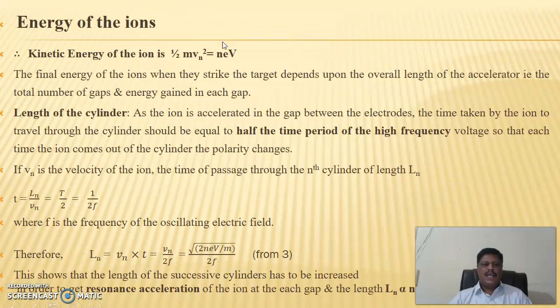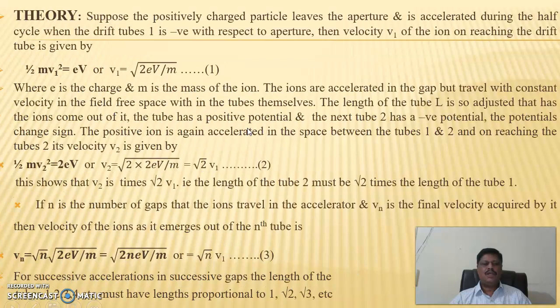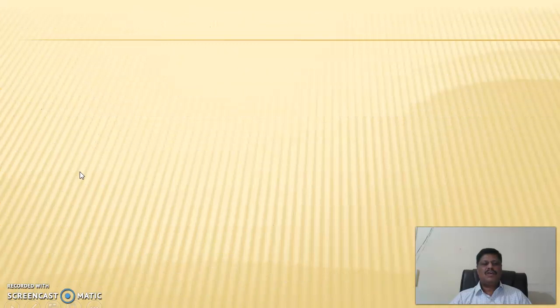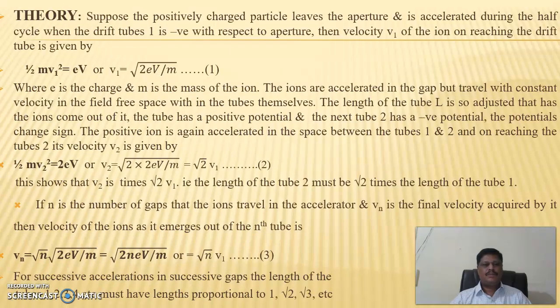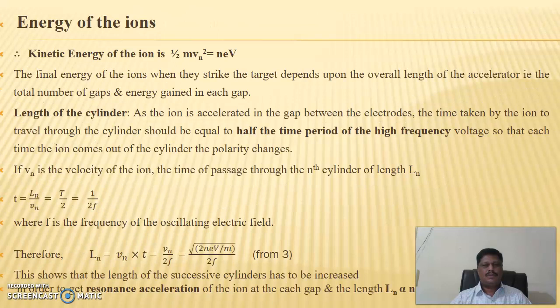The expression for energy of the ions: the kinetic energy of the ions coming out of the drift tubes is given by ½mVn² = neV, because ½mV1² = eV, ½mV2² = 2eV, so for the nth tube, it is ½mVn² = neV. The final energy of the ions when they strike the target depends on the overall length of the accelerator, that is the total number of gaps, and energy gained in each gap.